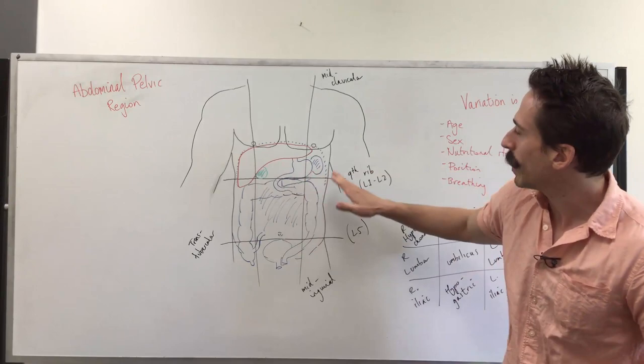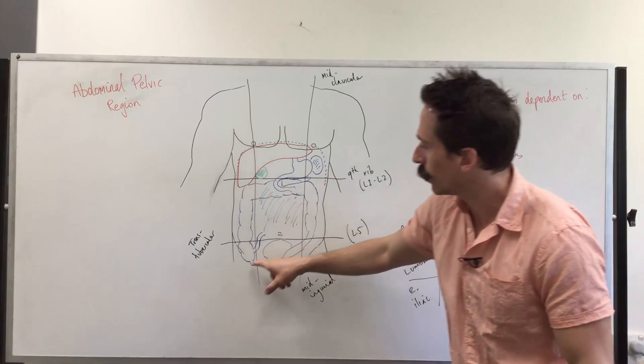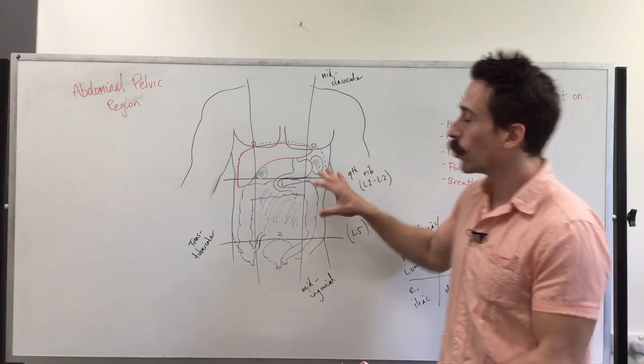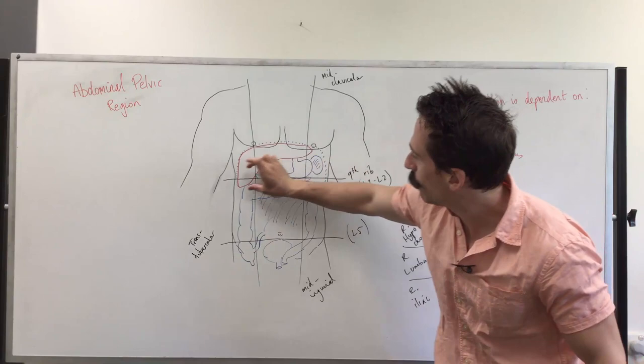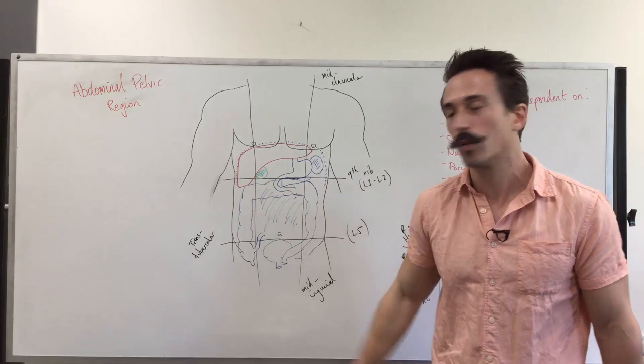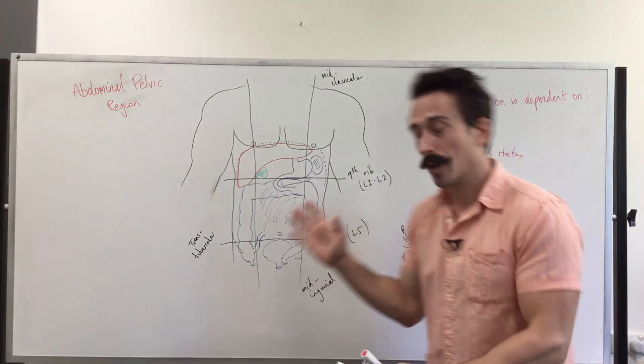So we've got the liver, stomach, spleen, gallbladder, pancreas, small intestines, large intestines, including the appendix and bladder there. And if we were to look at the kidneys, they're sitting way behind all of this, sitting between both these lumbar regions and up towards little portions of it going up in towards the top, left and right hypochondriac area. So this is a run through of the nine abdominal pelvic regions.